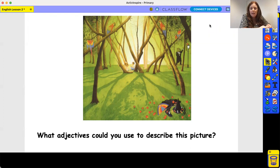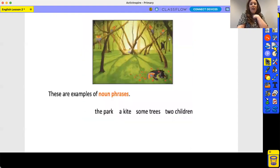I'm sure you've got lots of other examples. So today we're going to have a little look at something called noun phrases. My rap that I always sing for you in class: a noun is a person, place, or thing. And a noun phrase is where you are using a noun within a phrase. The park, a kite, some trees, two children—they are four different noun phrases that we could use.